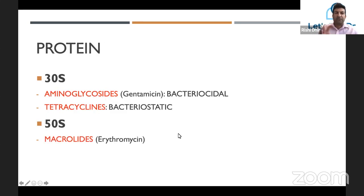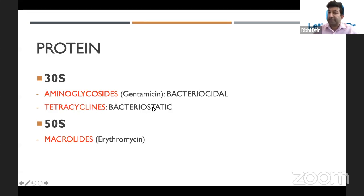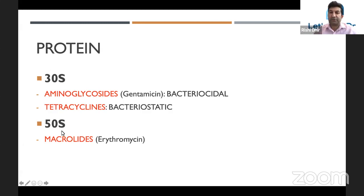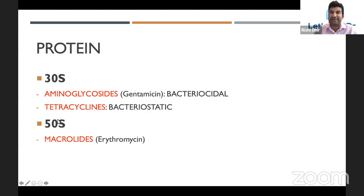Next are antibiotics which act on the proteins — remember 30S and 50S ribosomes. Aminoglycosides like gentamicin act on the 30S ribosome and are bactericidal — they kill the bacteria. Tetracyclines are bacteriostatic — they don't quite kill the bacteria but stop their activity temporarily. Those which act on the 50S ribosomes include macrolides such as erythromycin. A helpful memory trick: aminoglycosides — A is earlier in the alphabet, so act on the 30S; macrolides — M is later in the alphabet, act on the 50S.